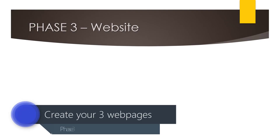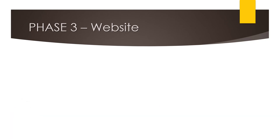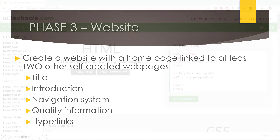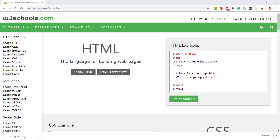Now we need to get around to making our website and planning the content that's going to go onto each page. You need to create a web page with a home page that is linked to at least two other self-created web pages — so we're making a website that consists of three web pages we created ourselves. This needs to have a title, introduction, a navigation system, quality information, and hyperlinks.